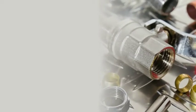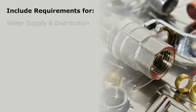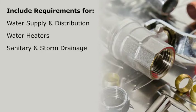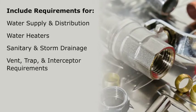The plumbing codes cover all parts of a plumbing system and include requirements for such things as water supply and distribution, water heaters and sanitary and storm drainage, as well as vent, trap, and interceptor requirements.